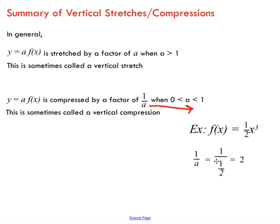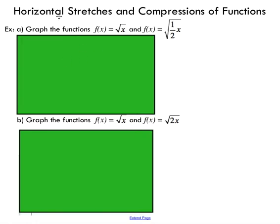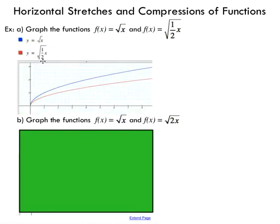A lot of people have trouble with this — don't get too confused. You can just say you're compressing by whatever number is in the denominator. Now I want to quickly talk about horizontal stretches and compressions. I'll use the example of the square root of x, and I'm going to plot a graph where I'm transforming the function by multiplying by 1/2 inside the function. This is different — the multiplying factor is inside my function. The blue graph is my base graph, root of x, and the red graph is the transformed function.